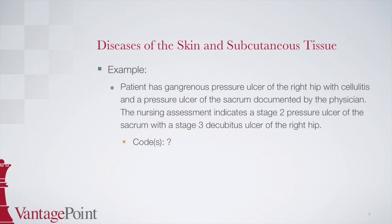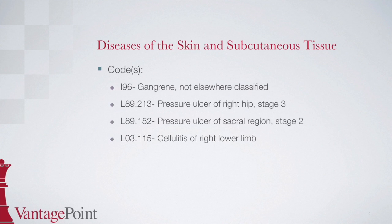Please pause the webinar to complete this example and then hit play to continue and learn the answer. The first code is I-96, gangrene not elsewhere classified. The guidelines state that if gangrene is documented, it must be coded first. To locate this code, start at ulcer in the alphabetic index and then locate gangrenous. There is a note which states 'see gangrene.' The code next to gangrene is I-96, which you would then confirm in the tabular. The next code is L89.213, pressure ulcer of right hip, stage 3. To locate this code, start at ulcer in the alphabetic index, then find pressure indented below.